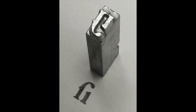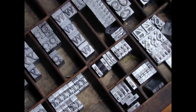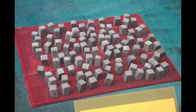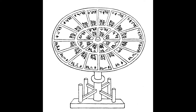It is often assumed that the story of type begins with Gutenberg's great invention of movable type for printing. But the Chinese experimented with relief printing for hundreds of years prior to Gutenberg, carving entire book pages in reverse from single slabs of wood, then inking them and printing them. They also made a foray into movable type using characters made from wood, ceramic, and bronze. Since the Chinese character set ranged in the thousands of combinations, they deployed large turntable composing trays to set their type.